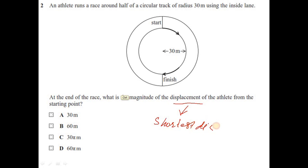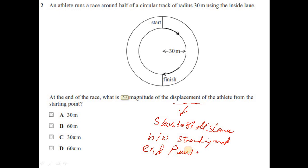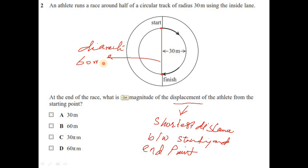The start point and end point are at opposite ends of the semicircle, so the shortest distance between them is the diameter of the circle, which is 60 metres. Therefore displacement is 60 metres, and the answer is option B.